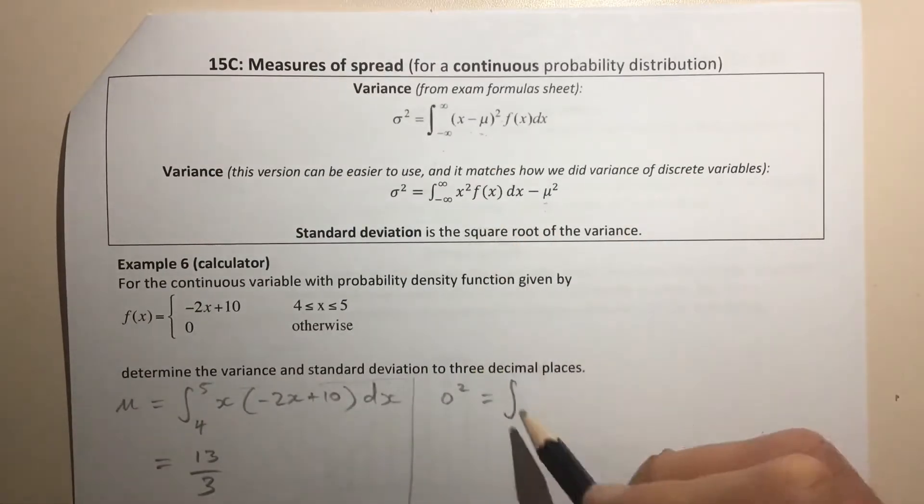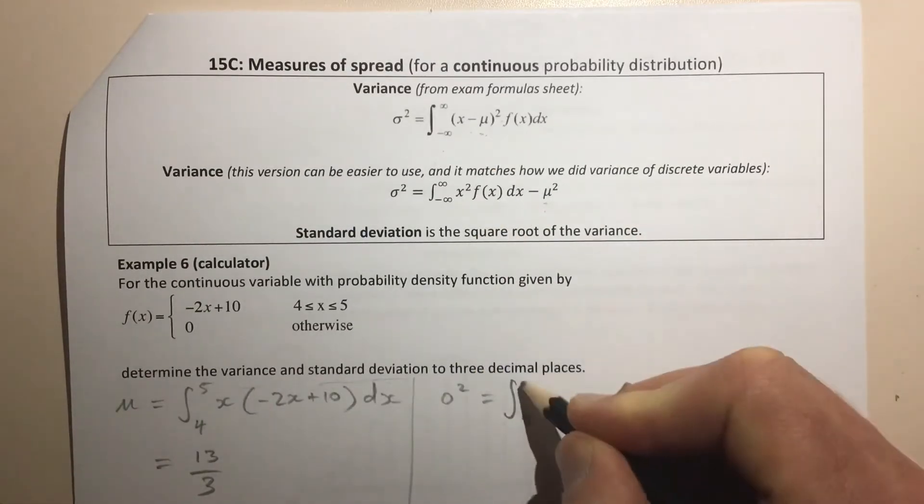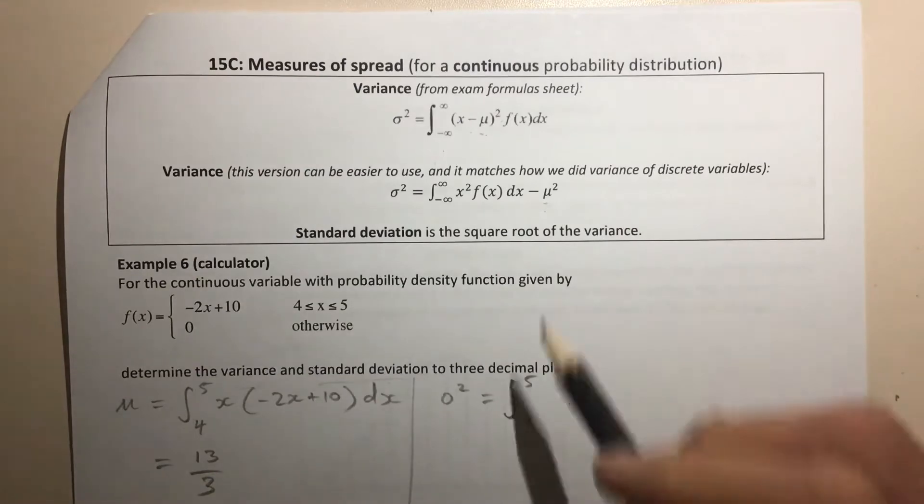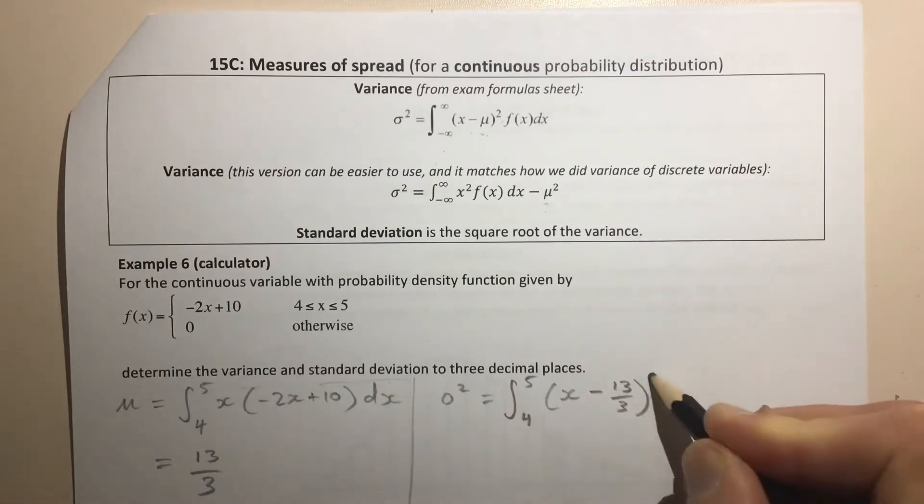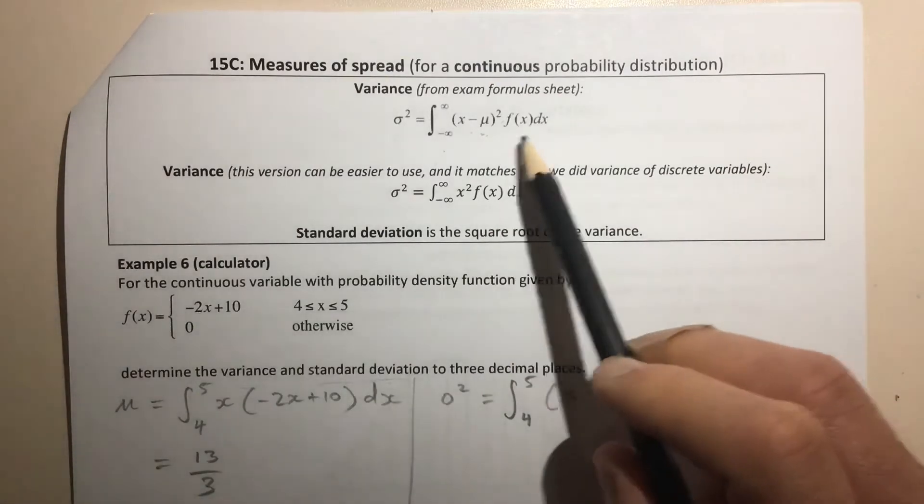Let's start with this one. So the integral from 4 to 5 of (x - 13/3)² times the function,